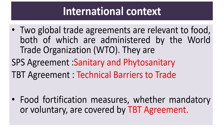In the international context, two global trade agreements are relevant to the food industry, both administered by the World Trade Organization. These are the SPS Agreement (Sanitary and Phytosanitary Agreement) and the TBT Agreement (Technical Barriers to Trade Agreement). Food fortification measures, whether mandatory or voluntary, are covered by the TBT Agreement.